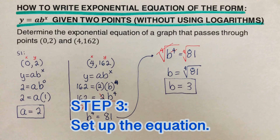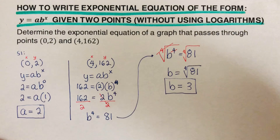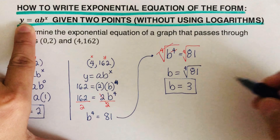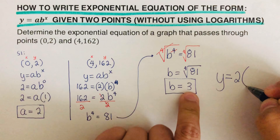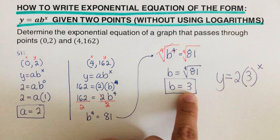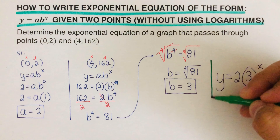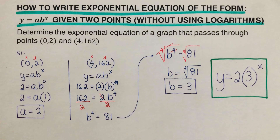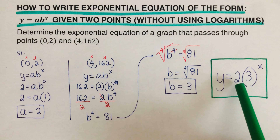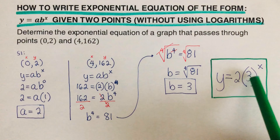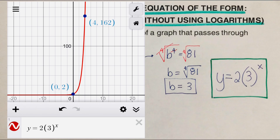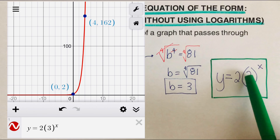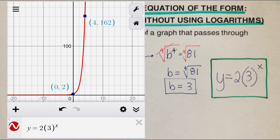Step three is to set up the final equation. Using a equals 2 and b equals 3, the equation is y equals 2 times 3 raised to the power x. If we graph this, y equals 2 times (3 raised to the power x) passes through both points: (0, 2) and (4, 162), which you can see confirmed in the graph.